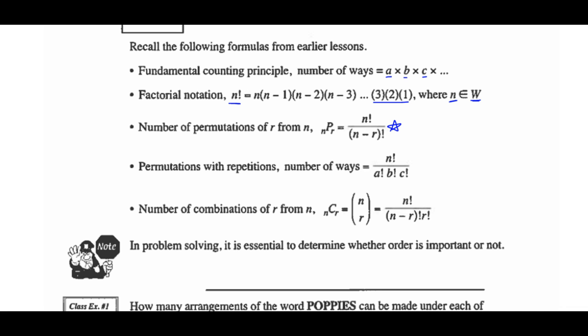Permutations with repetitions: without any restrictions would be N factorial, or N permutations of N. But as soon as you have repetitions, divide out the number of repetitions as factorials — divide out repetitions of A as A factorial, repetitions of B as B factorial, repetitions of C as C factorial, and so on.